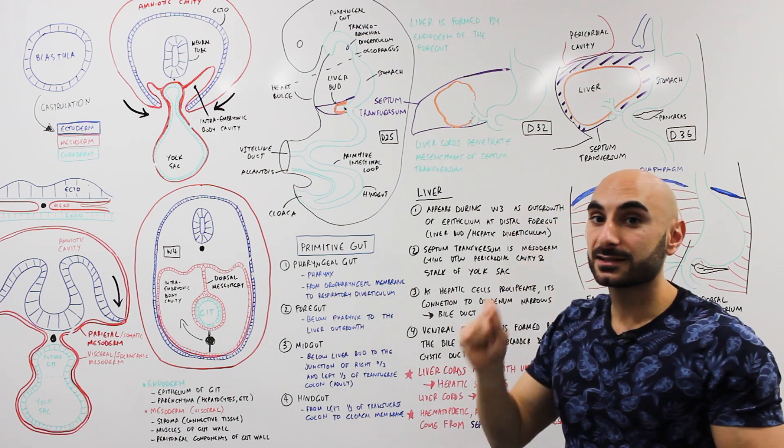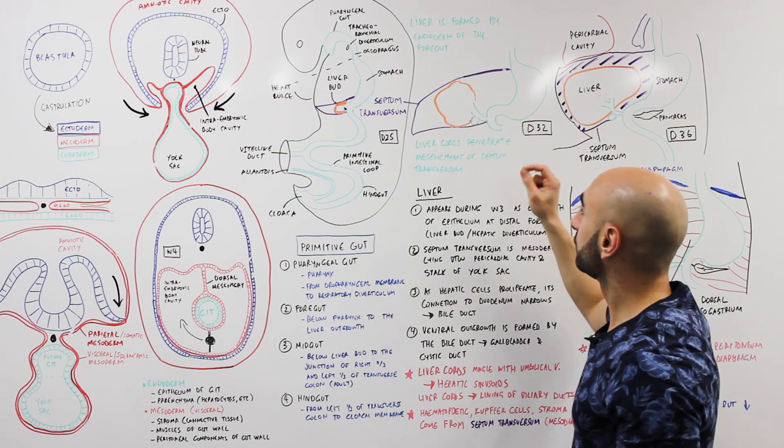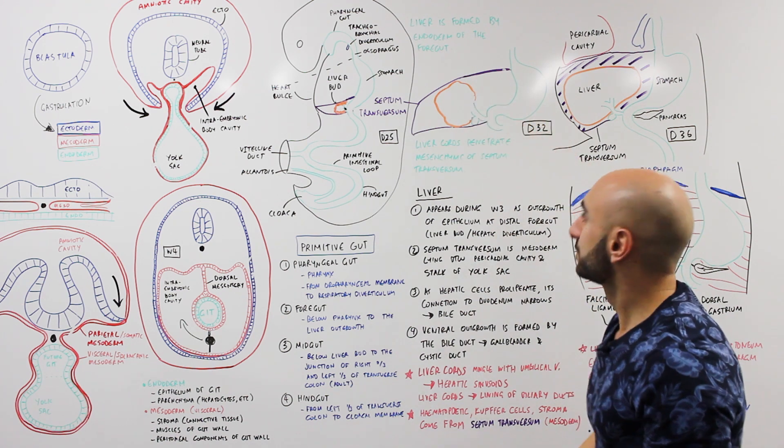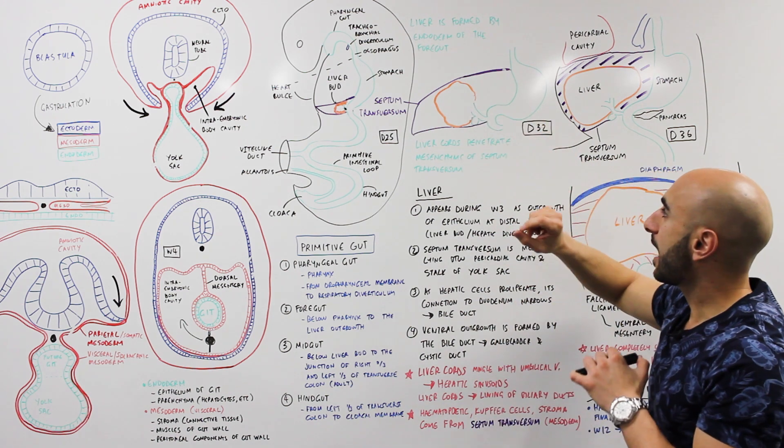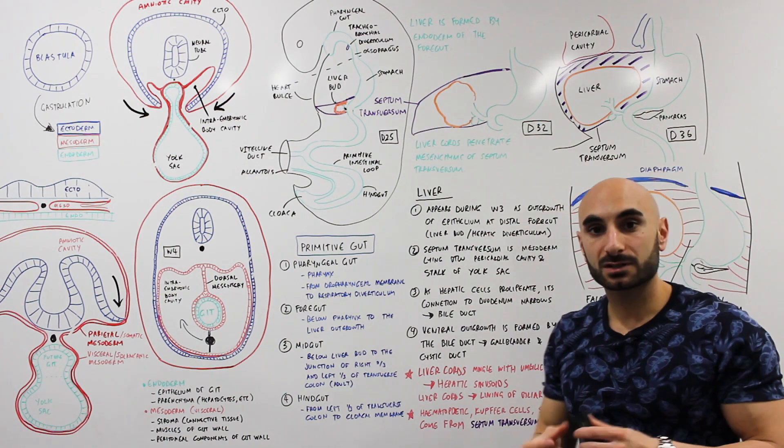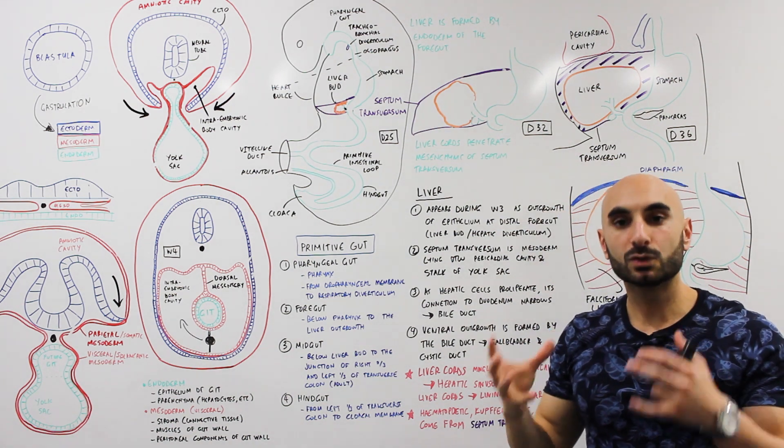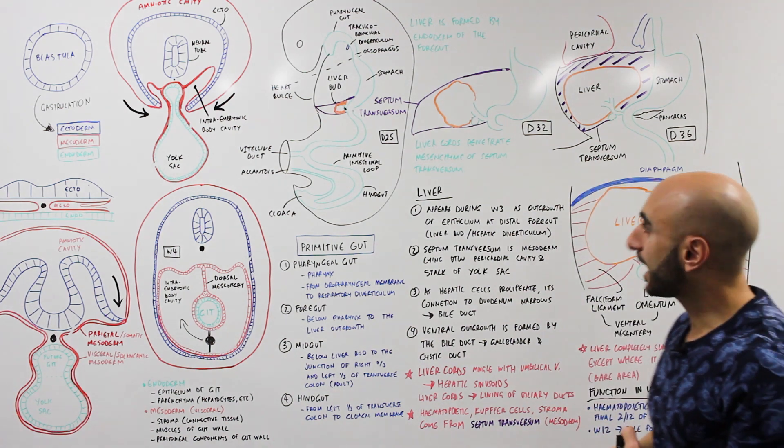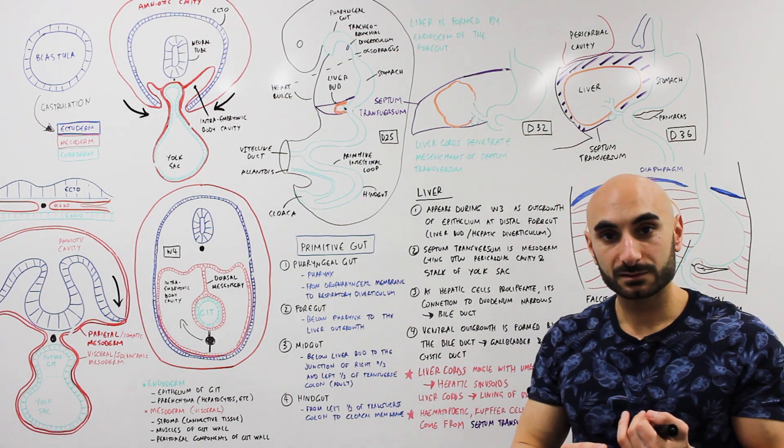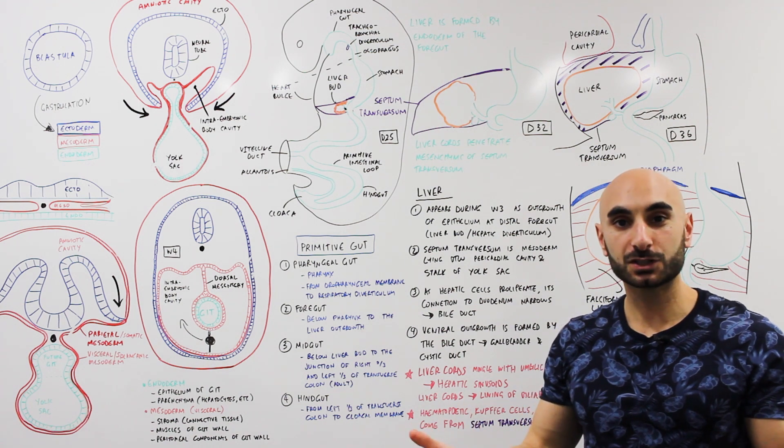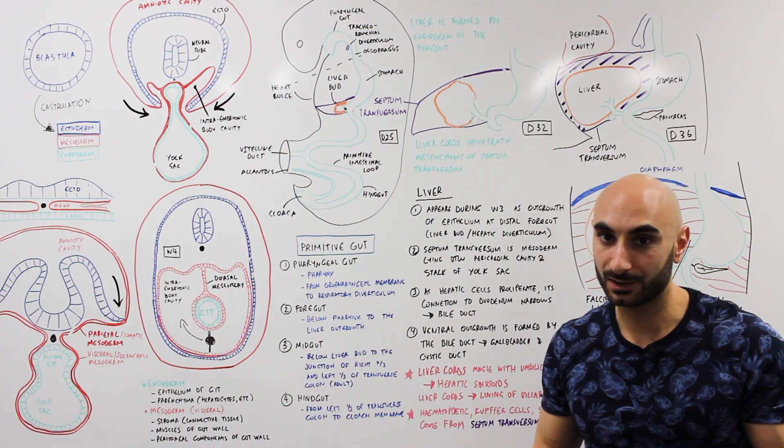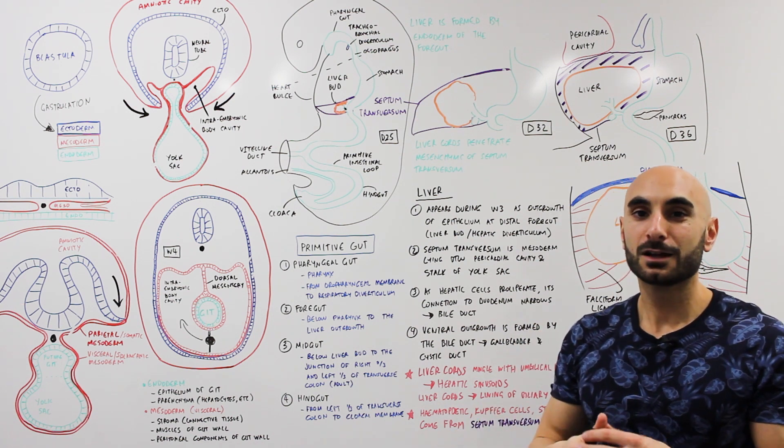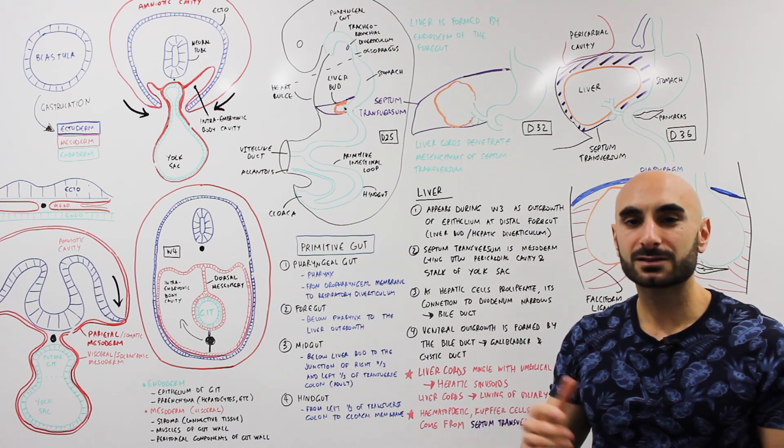The gallbladder and cystic duct are grown or developed from the bile duct. So the septum transversum actually does contribute to liver development. The septum transversum forms the Kupffer cells, stroma or connective tissue, as well as the hematopoietic cells.